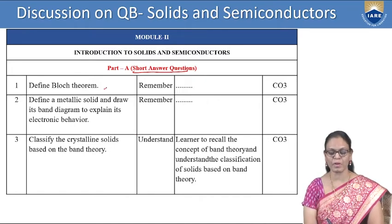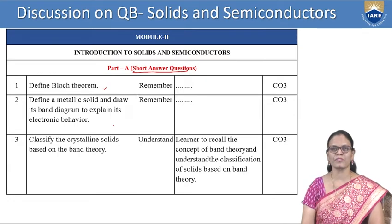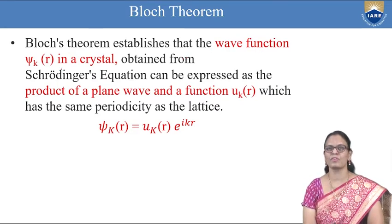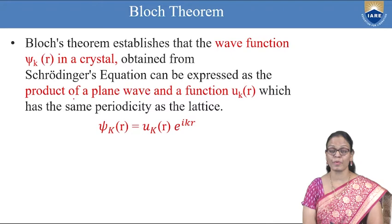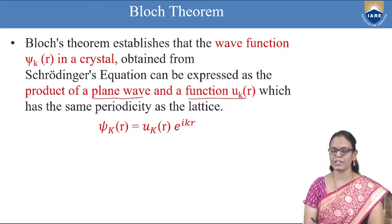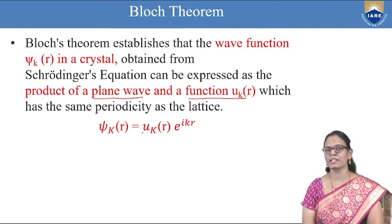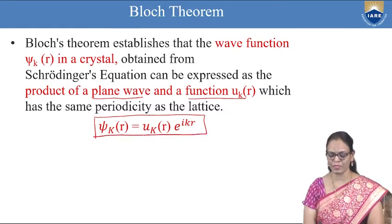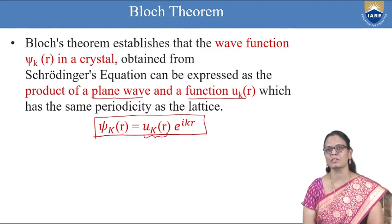The first question is: define Bloch's theorem. Bloch's theorem establishes that the wave function ψ_k(r) in a crystal, obtained from the Schrödinger equation, can be expressed as a product of a plane wave and a function u_k(r) which has the same periodicity as the lattice. So ψ_k(r) = u_k(r) · e^(ikr), where u_k(r) describes the periodicity and e^(ikr) is the plane wave function.